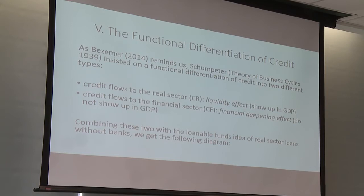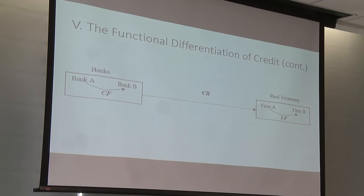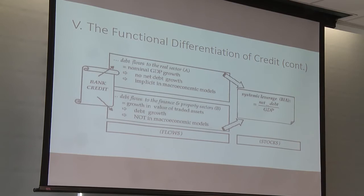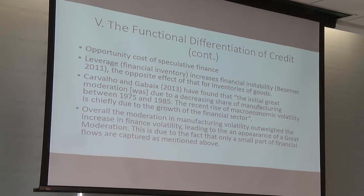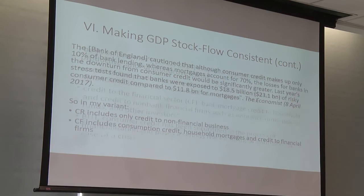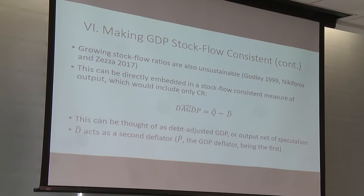Credit flows to the real sector have a liquidity effect and are already included in GDP. Credit flows to the financial sector deepen the financial system but don't show up in GDP. Money is not neutral, and unproductive credit harms GDP growth — speculative finance, unlike productive finance, has an opportunity cost for the real economy. I build a debt-adjusted GDP measure: real GDP growth deflated by a systemic leverage index, giving debt-adjusted GDP. It's very similar to my previous work and Foley's, though from a completely different perspective — and striking that results are the same. If you account for debt, GDP is much closer to employment.